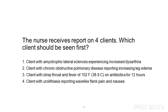The nurse receives report on 4 clients. Which client should be seen first? 1. Client with amyotrophic lateral sclerosis experiencing increased dysarthria. 2. Client with chronic obstructive pulmonary disease reporting increasing leg edema. 3. Client with strep throat and fever of 102 F (38.9 C) on antibiotics for 12 hours. 4. Client with urolithiasis reporting wave-like flank pain and nausea.